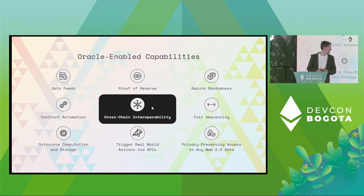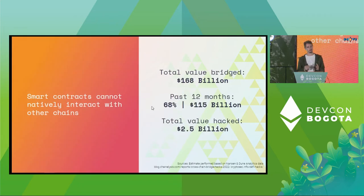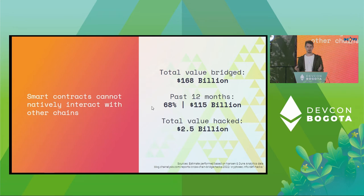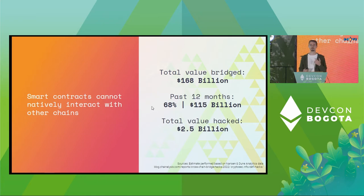The first is cross-chain interoperability. The problem is that smart contracts cannot natively interact with smart contracts running on other blockchains. But we live in a multi-chain world now — there are dozens of chains out there. It's a very heterogeneous environment: some are L1s, some are L2s, some use the EVM, some don't.